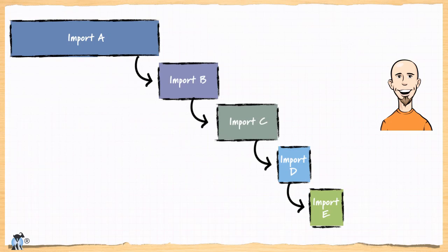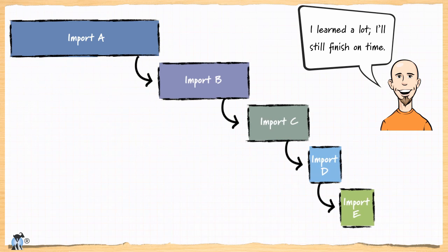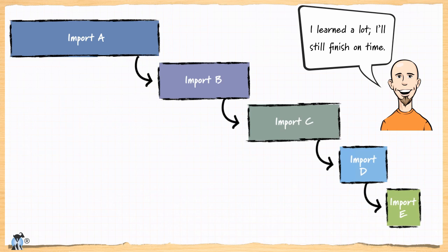I asked him what impact he thought this would have on the rest of the schedule. He said, oh, no impact at all — I learned a lot doing format A, so the rest will go faster than planned. I'll still finish in nine days total. Well, you can guess that this isn't what happened. The problem here was that the nature of the work was highly correlated. If importing from format A took 50% longer than expected, our best guess for the other formats is that each of those will also take 50% longer than initially expected.